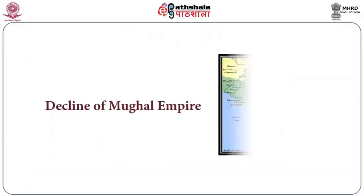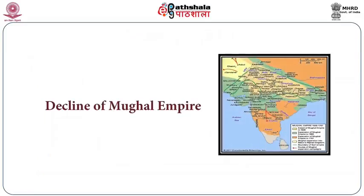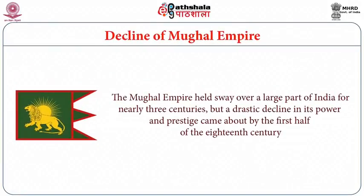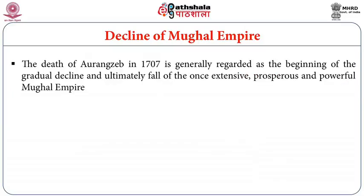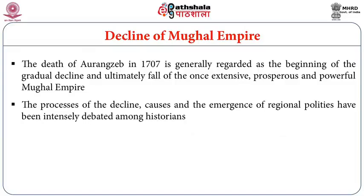We will first focus on the decline of the Mughal Empire, one of the biggest empires India ever had. The Mughal Empire held sway over large parts of India for nearly three centuries, but a drastic decline in its power and prestige came about by the first half of the 18th century. The death of Aurangzeb in 1707 is generally regarded as the beginning of this gradual decline.